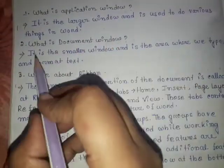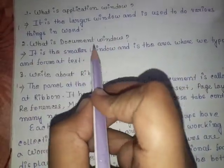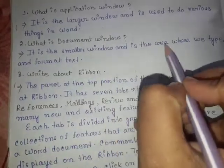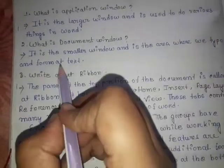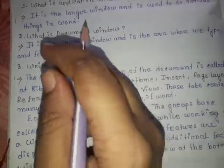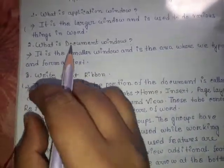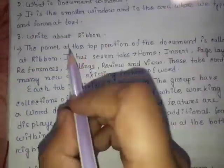What is a document window? It is the smaller window. It is the area where we type and format text.